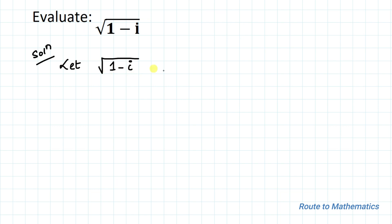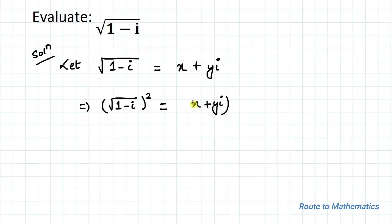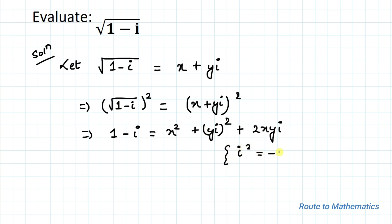Let's take √(1 - i) = x + yi. Squaring both sides, we get 1 - i = x² + 2xyi + (yi)². Since i² = -1, this simplifies to 1 - i = x² - y² + 2xyi.